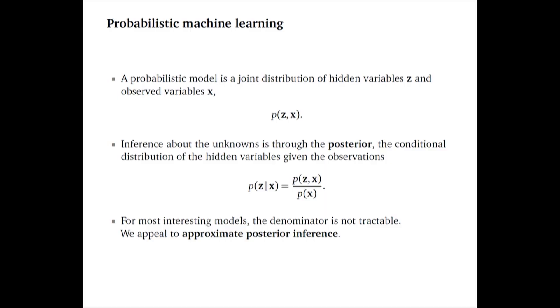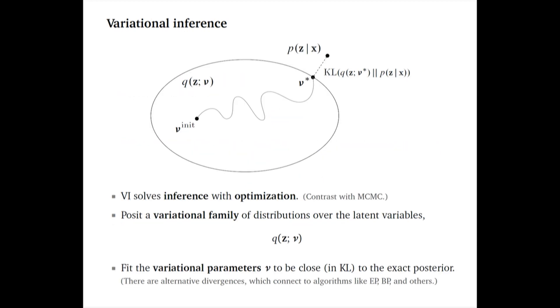What's probabilistic machine learning? Well, a probabilistic model is formally a joint distribution of hidden variables Z and observed variables X. Z is hidden and X is observed, where all inference about the unknowns is done through the posterior — the conditional distribution P of Z given X. For most models you might care about, this is hard to calculate because of the denominator P of X, so we appeal to approximate posterior inference — MCMC, variational inference, MAP estimation, whatever it might be — because we can't actually calculate this posterior.